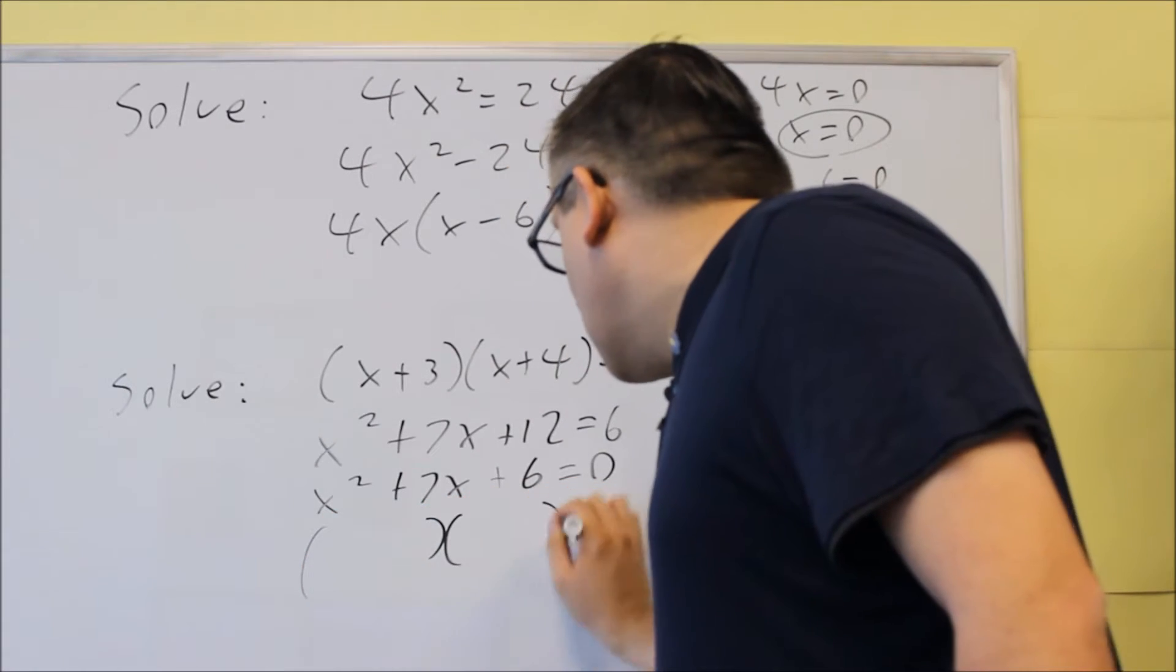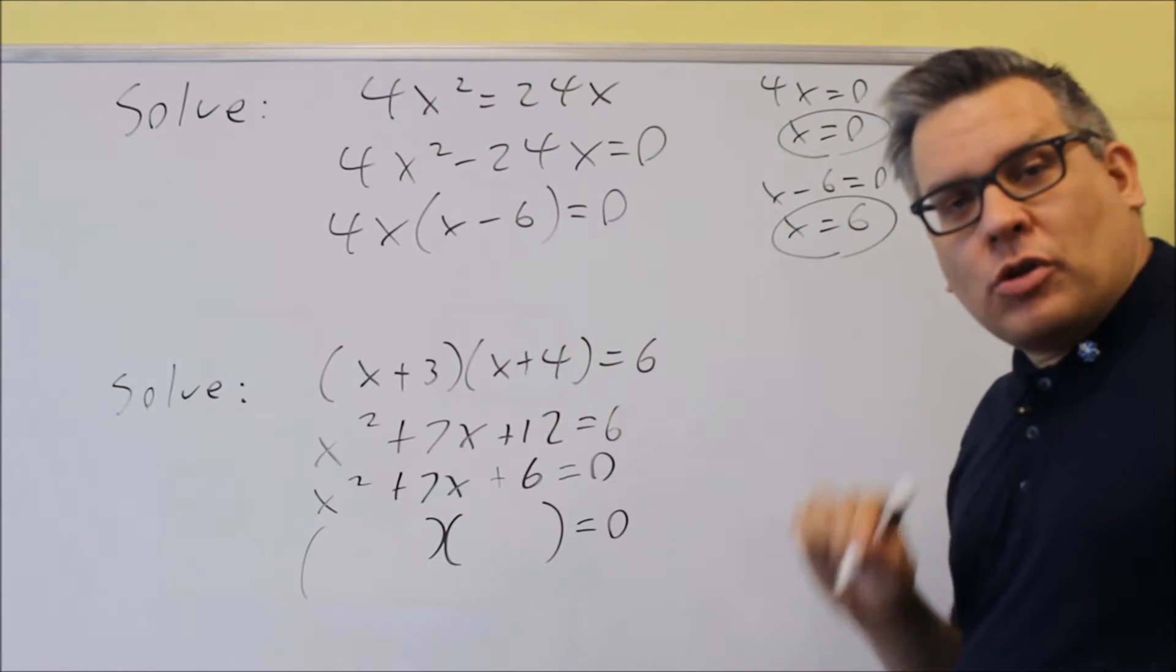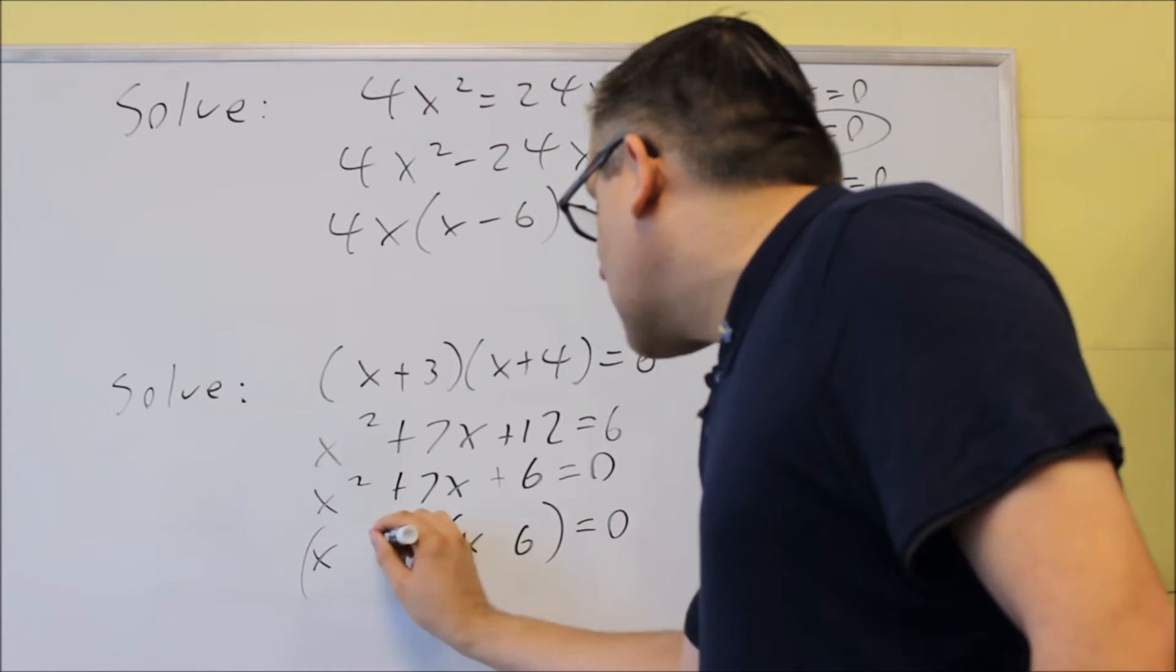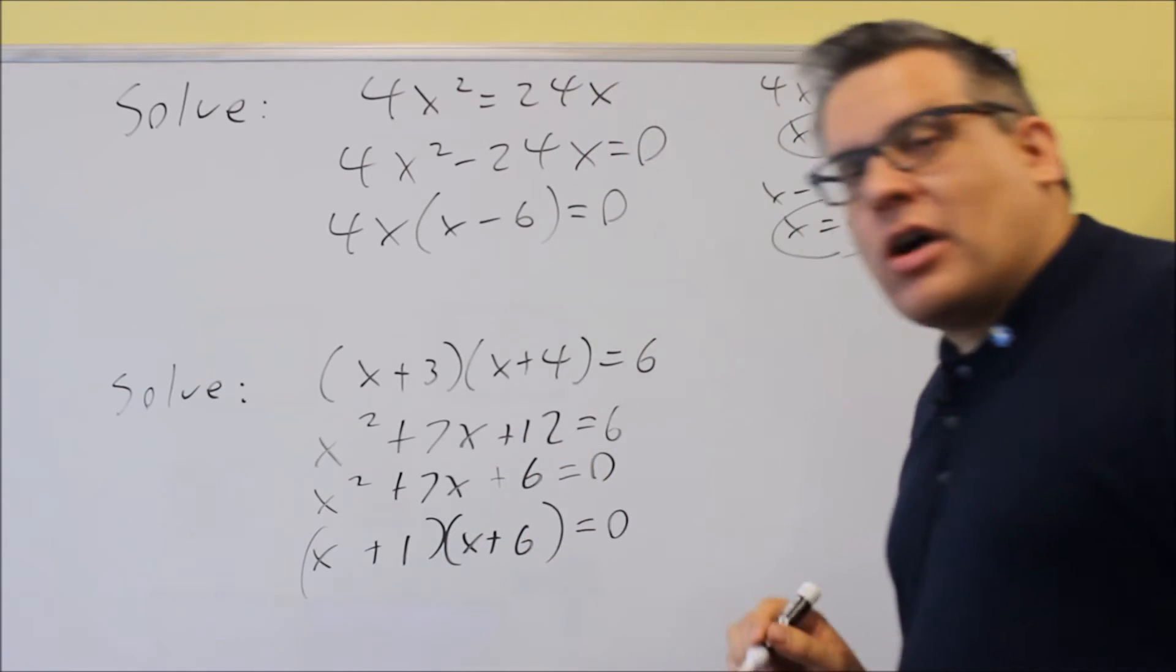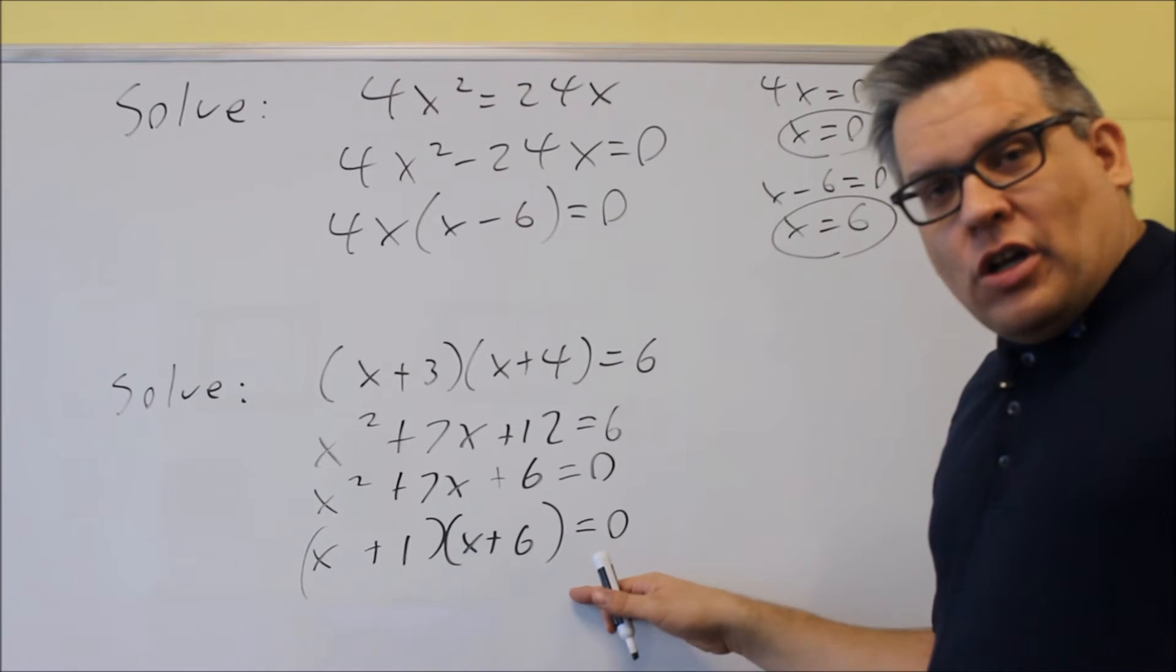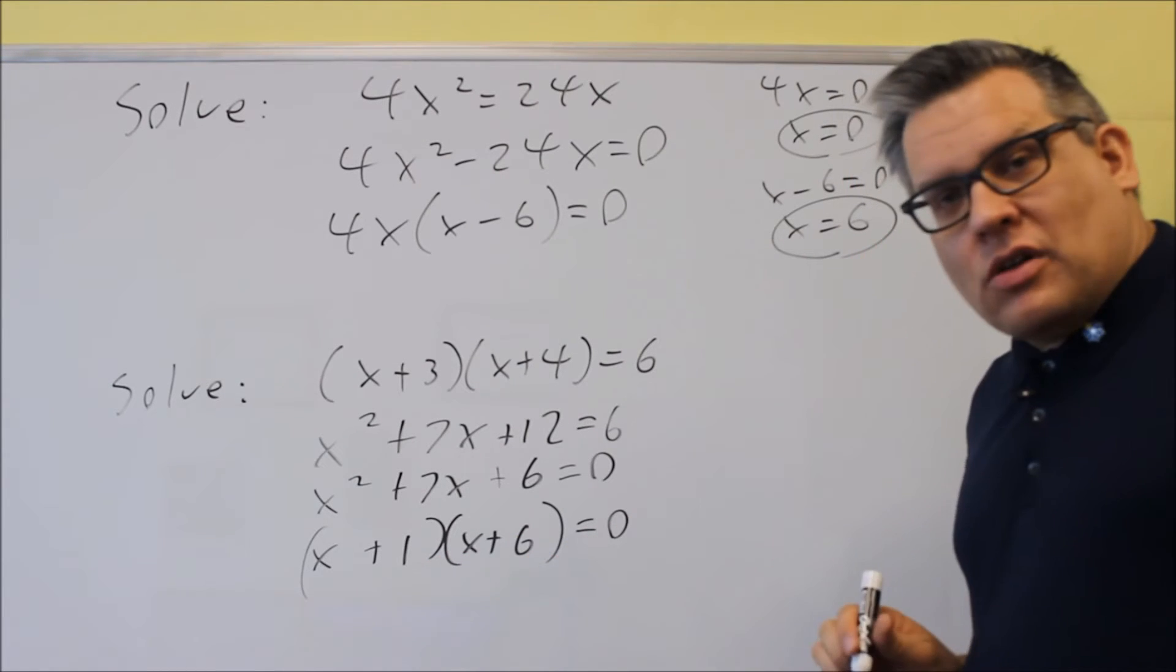Factors of six that add up to seven would be one and six, so we get one and six here, and that's going to have to be a plus, because there's all plus signs in there. Now at this point, this is where you're going to take both of them and set it equal to zero.